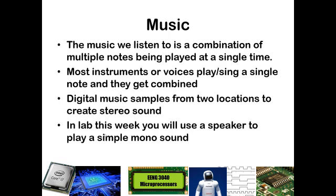The music that we listen to is typically a combination of multiple notes being played at a single time. So if you are listening to your favorite band you might hear some notes played by a guitar, you might hear some notes sung, you might hear some notes played by a violin, a fiddle, or a trumpet. These sounds all blend together to make our favorite music, and as these different instruments and voices come together, their frequencies get laid on top of each other.